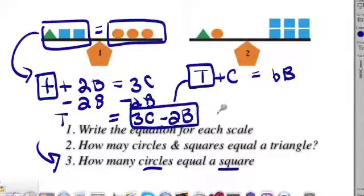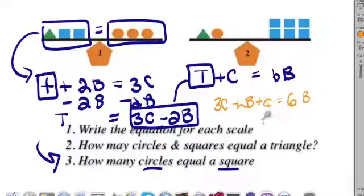I could do that a bunch of different ways. I could switch them, or I could just rewrite the equation. It would look like 3c minus 2b plus c is equal to 6b. If I combined my like terms, I would get 4c minus 2b is equal to 6b.